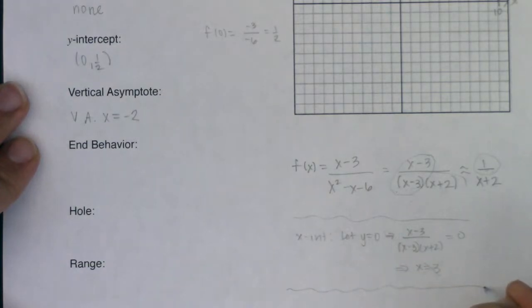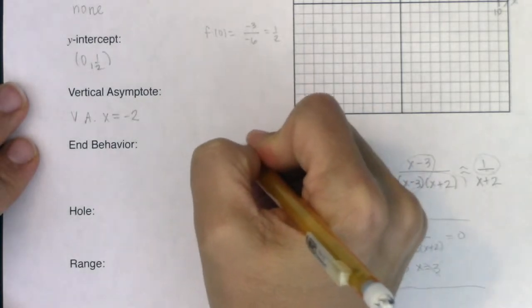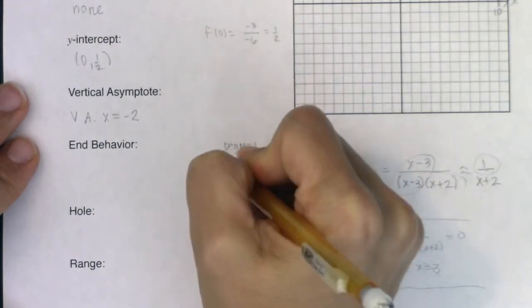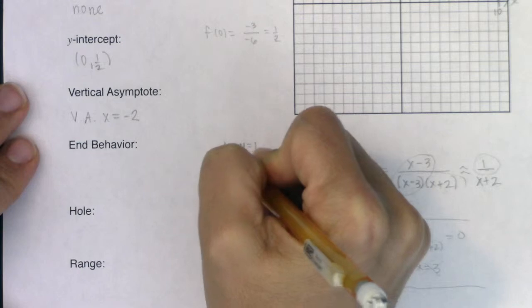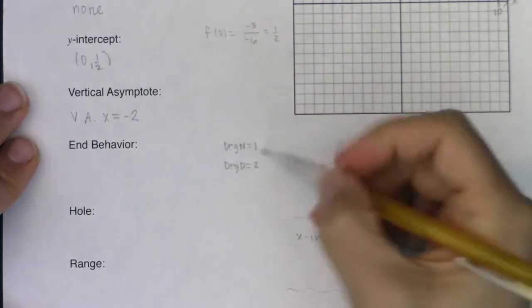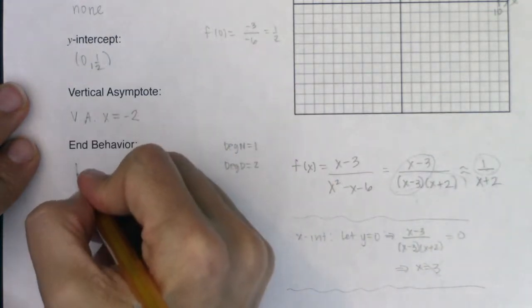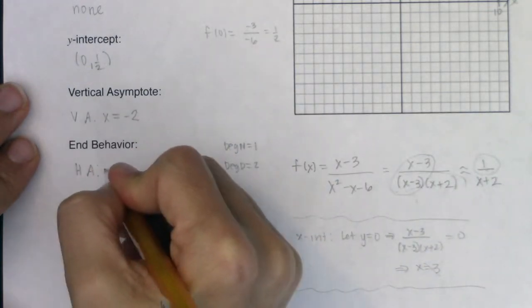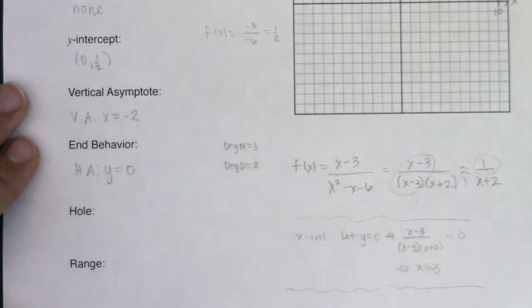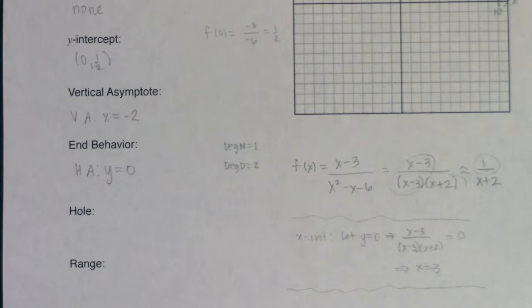For end behavior, we're always looking at degrees of numerators and denominators. The degree of my numerator is 1 and the degree of my denominator is 2. Whenever the degree of the numerator is strictly less than the degree of the denominator, you will have a horizontal asymptote at y equals 0 — no arrows, no slants, just horizontal.